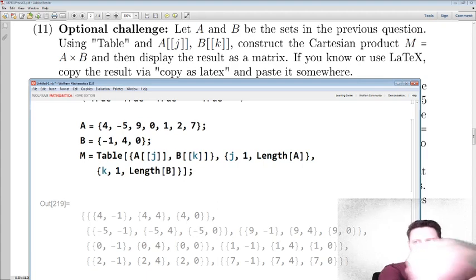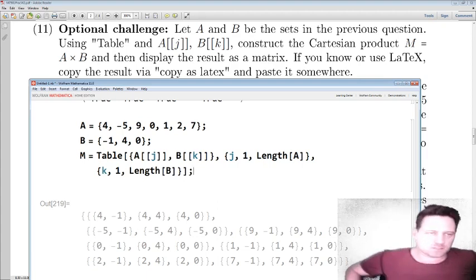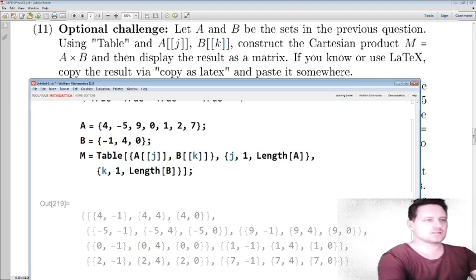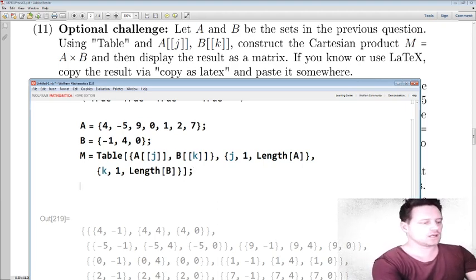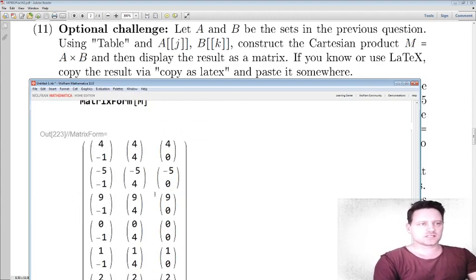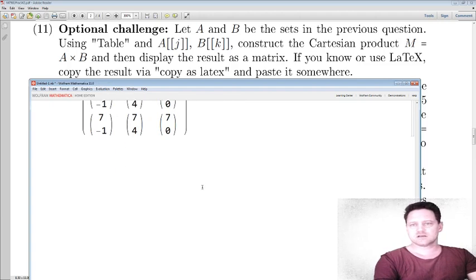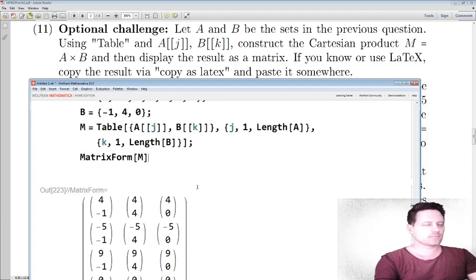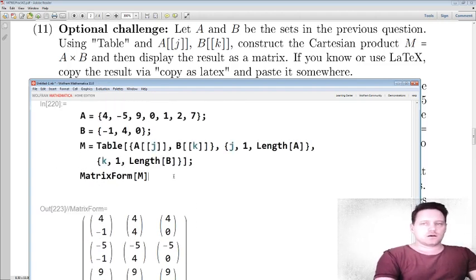And then the question asks for us to display this as a matrix. So then I will just press enter. Go to a new line. Matrix form m and shift and enter and have a look. So now I have a matrix containing all of these pairs. Next, which is the last part. And this is incredibly useful.